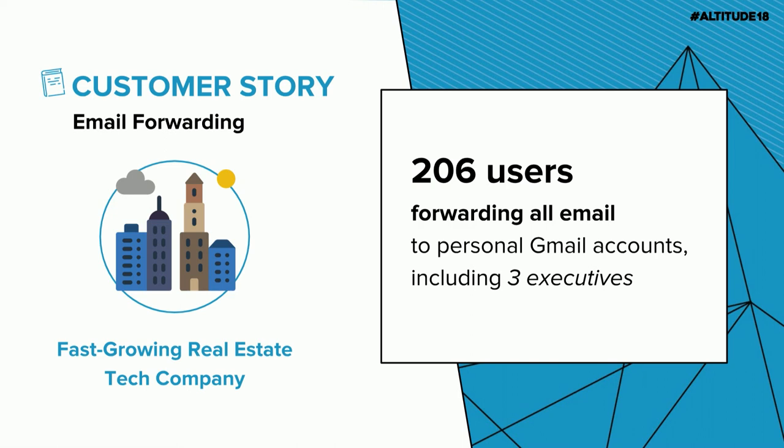That's exactly what happened with this next implementation story. We were working with a fast-growing real estate company of over 3,000 users. Looking at their email forwarding alerts, we found that over 200 of their users were forwarding their entire email inbox — and of those 200, three were top-tier C-suite executives. What was most concerning was that one of their worst offenders was their senior sales leader, who was forwarding everything containing a subject of 'leads' to their personal email account.